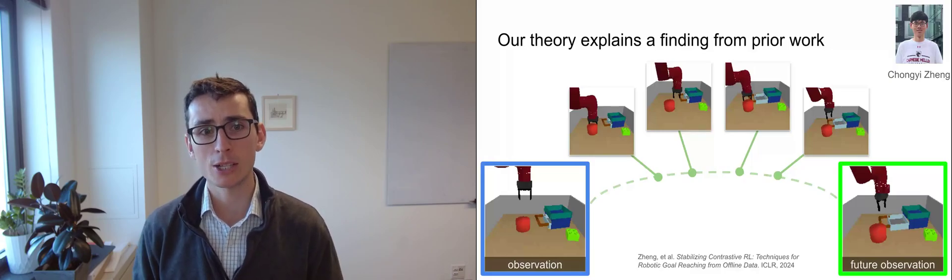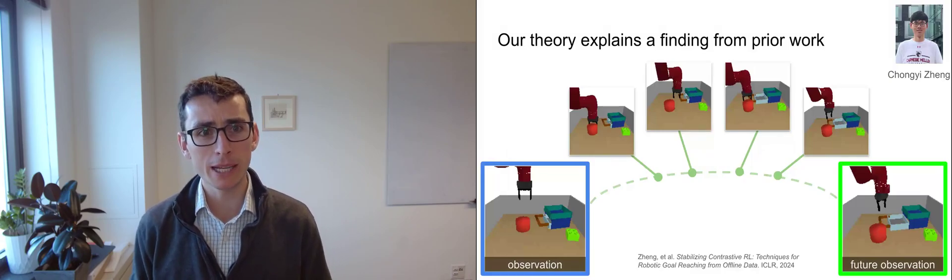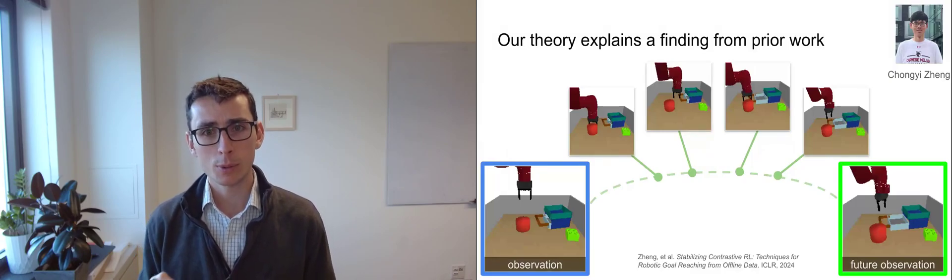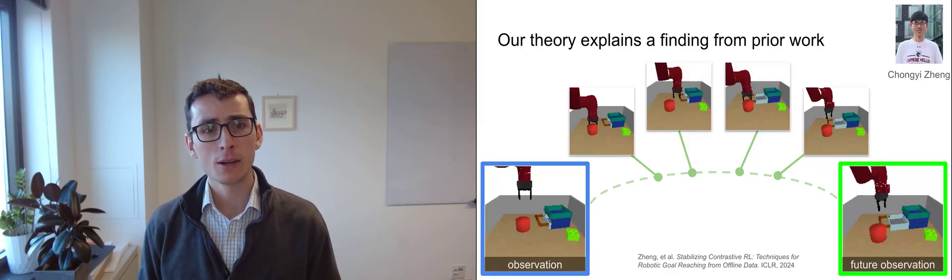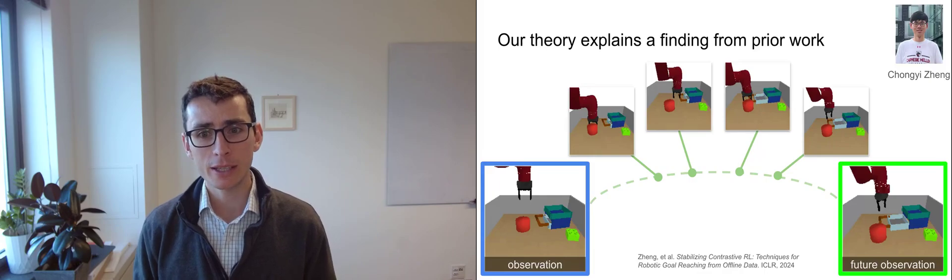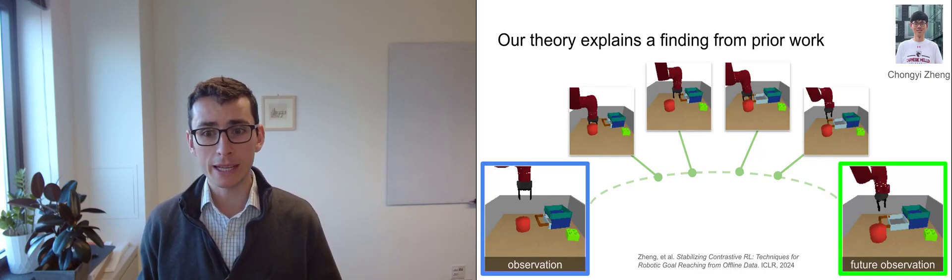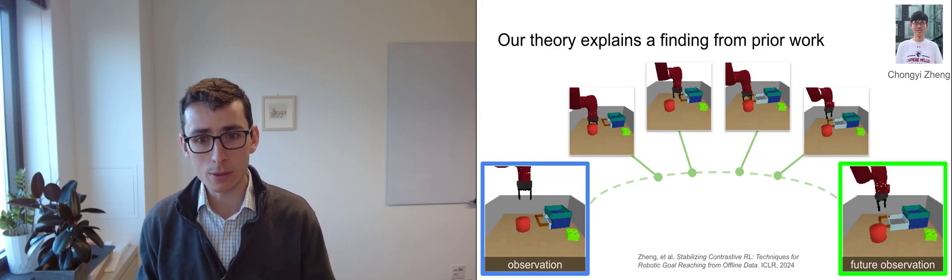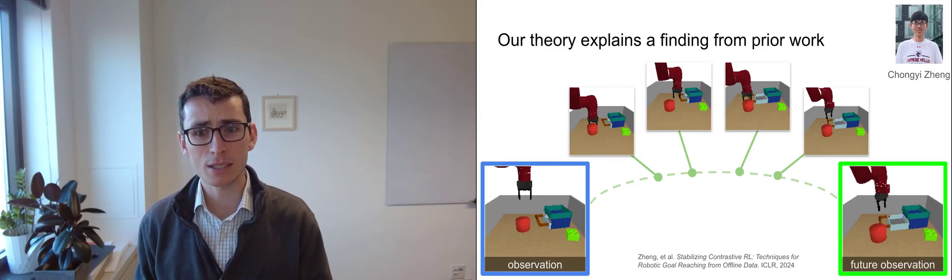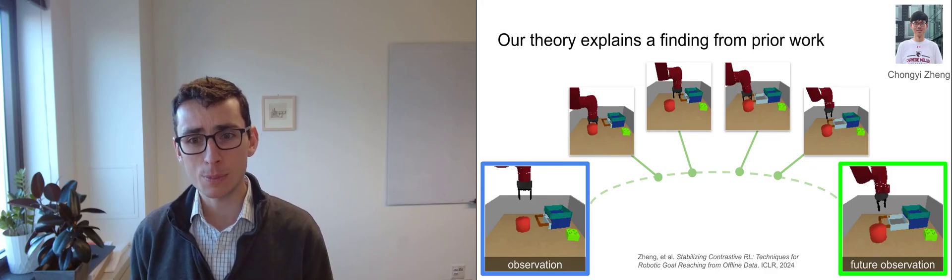Our results have several implications. One is that they help explain results from prior work. Prior work led by Chang Yi Zhang at last year's ICLR found that when you do temporal contrastive learning, you end up learning representations where you can do planning just by interpolating between the representations. And what our theoretical results show is that that wasn't just a fluke, but it's actually something that you expect to happen.